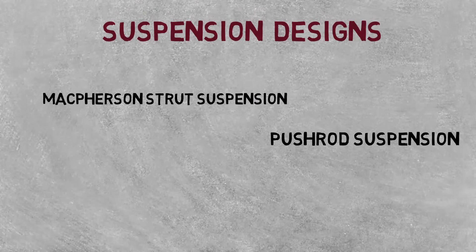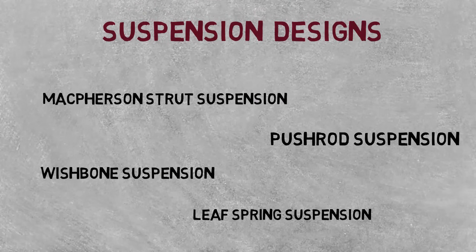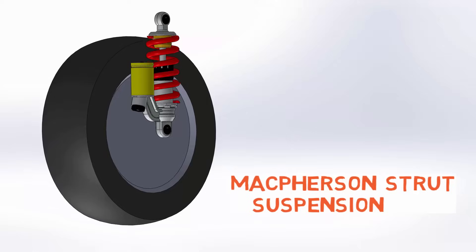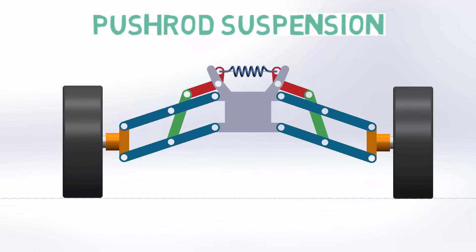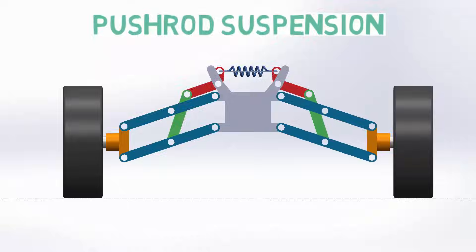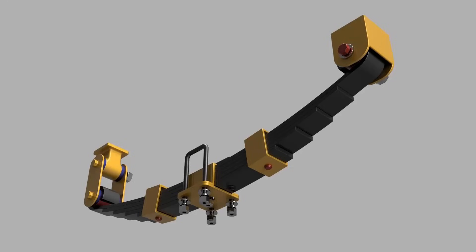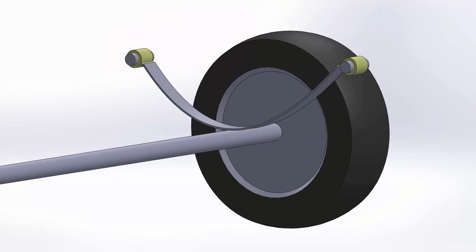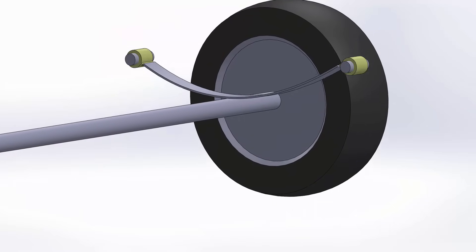Car manufacturers follow different designs for suspension depending upon the vehicle and its expected usage. McPherson suspension is one of the simplest mechanisms, in which a spring connects the wheel and chassis. Pushrod suspension is a monoshock suspension with a single spring in between. One of the most commonly used suspensions for heavy vehicles is a leaf spring suspension, where long flexible bars are installed on needles to absorb the shocks.